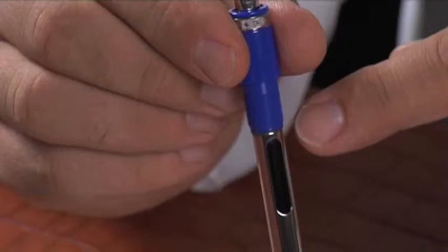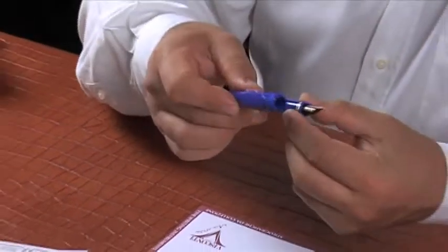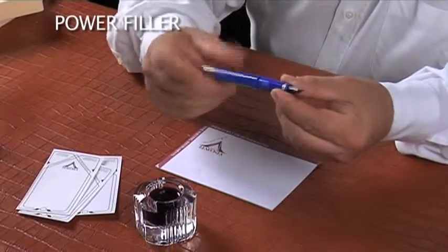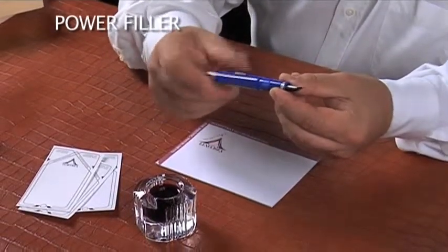You can check to see how full your pen is through the transparent window in the plunger. Screw the barrel back onto the grip section, and your pen is now ready for use.